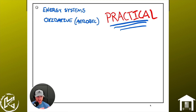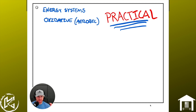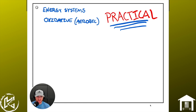This is the practical application of energy system programming. Today I'm going to be talking about one energy system specifically. There are three: we have creatine phosphate, we have glycolytic, and we have oxidative. I'm going to start with the oxidative, or aerobic, pathway in this video.